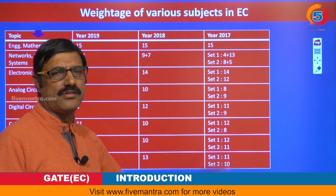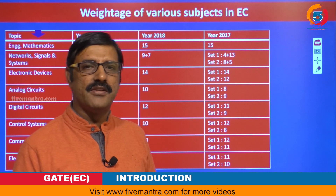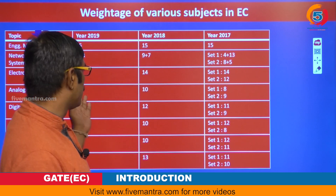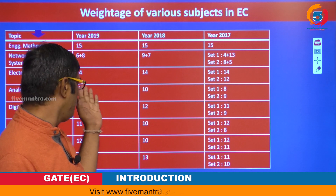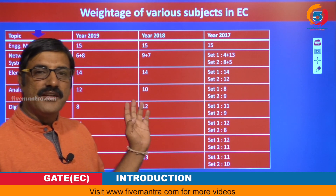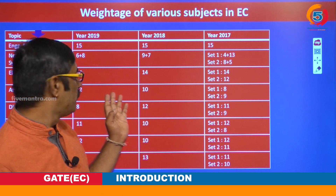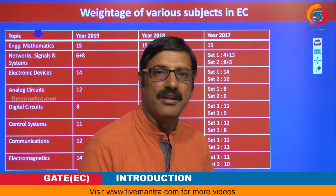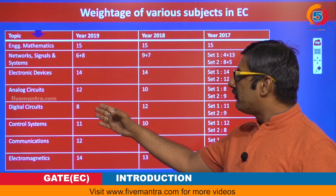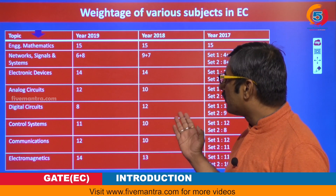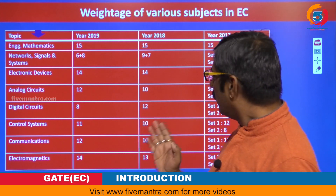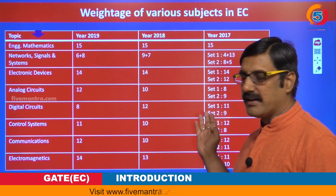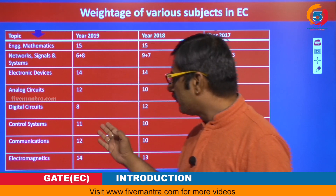For electronic devices, the weightage is almost 14 marks across all three years, with 12 marks in Set 2 of 2017. For analog circuits, the weightage ranges between 8 to 12 marks — around 12 marks in 2019, 10 marks in 2018, and 8 to 9 marks in 2017. For digital circuits, the weightage was 8 marks in 2019, 12 marks in 2018, and 11 marks in Set 1 and 9 marks in Set 2 of 2017.